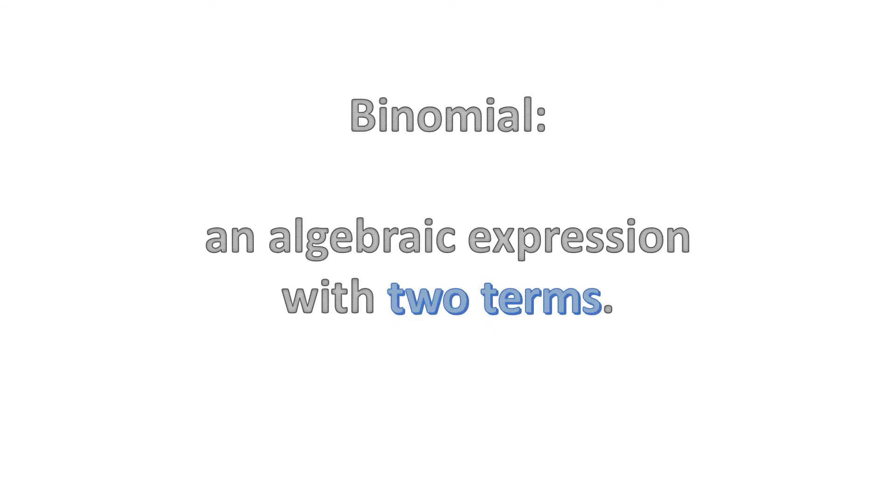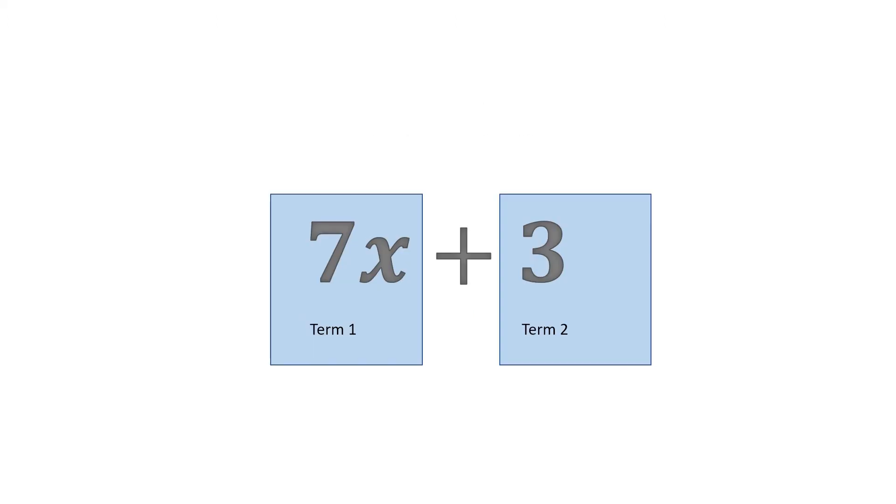Let's see what binomial states. Binomial states that it is an algebraic expression with two terms. For example, 7x plus 3. Our first term is 7x and then our second term is 3. We add a constant by addition.